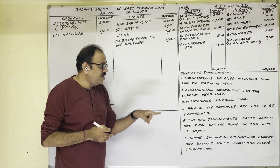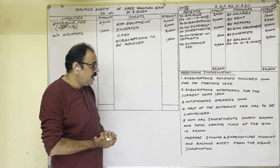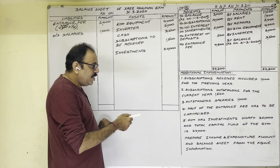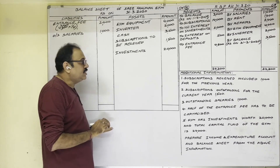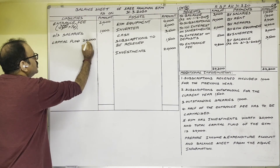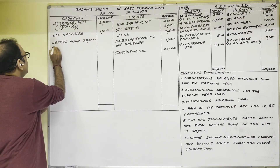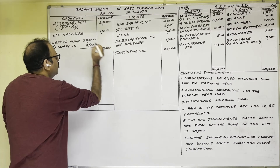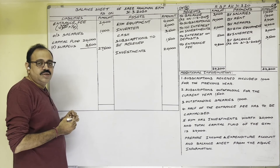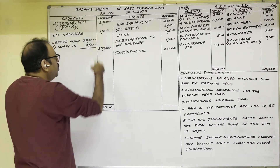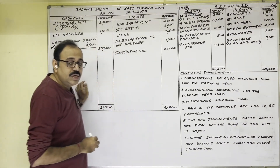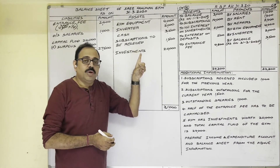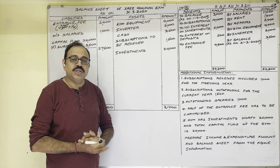Adjustment four — entrance fees done. Adjustment five: investments worth 20,000 — an asset, show under assets: 20,000. Capital fund of the gym is 24,000 — shown under liabilities in the inner column; add the surplus of 3,600 from the Income and Expenditure Account, giving outer column total 27,600. Finally, find the totals of both sides. Liabilities side total: 31,000. Assets side total: 31,000. Both sides are equal, so the problem is correct. This is problem 15 from the Accounting for Not-for-Profit Organizations topic. Hope this video is helpful to you. Thank you.